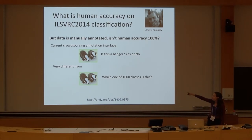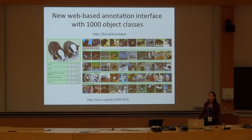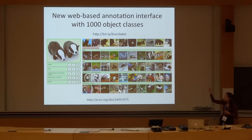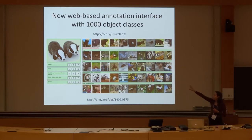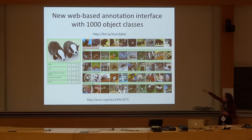So Andre designed a new web-based annotation interface for the 1,000 object classes — it's actually available online, so you can play around with it. On the left it shows you an image, you can make up to five predictions and move the order around. On the right are all 1,000 object classes with, I think, 10 example images per class.